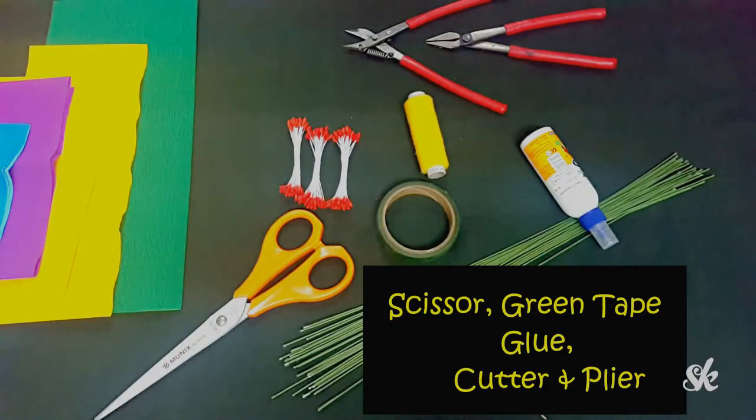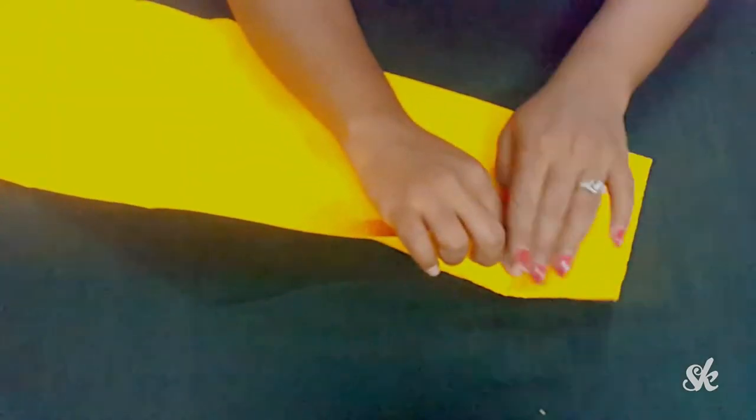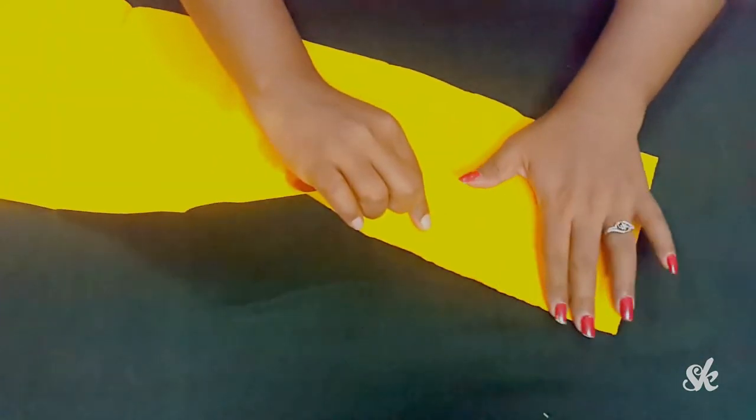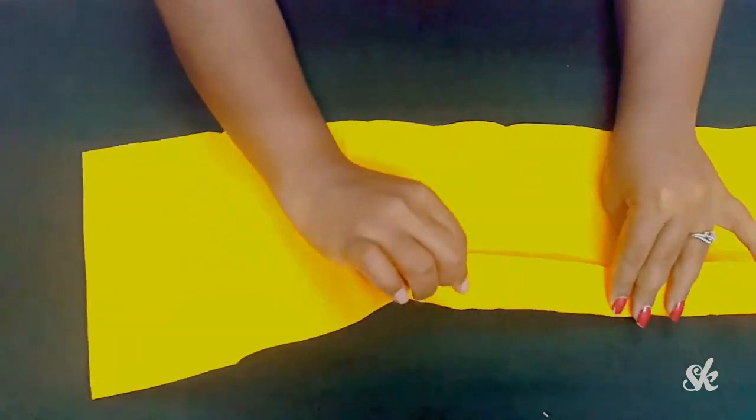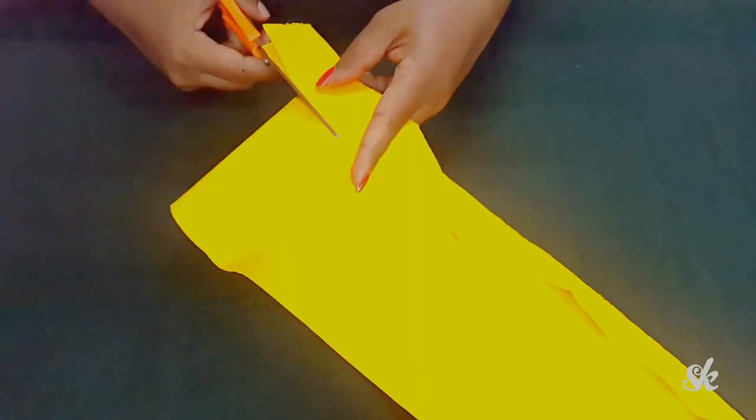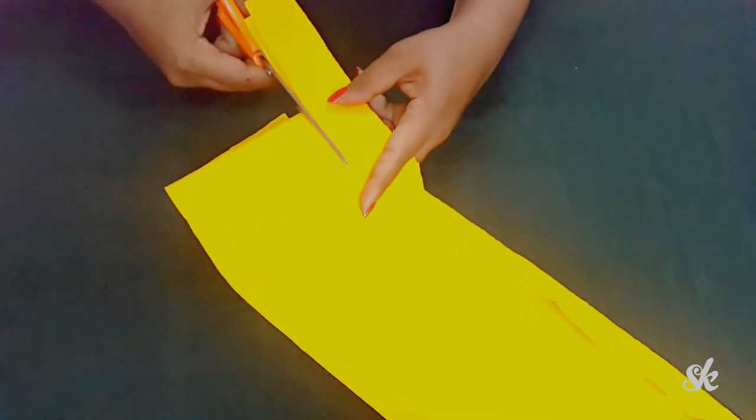First, fold up the crepe paper lengthwise. Now cut out the folded strips.